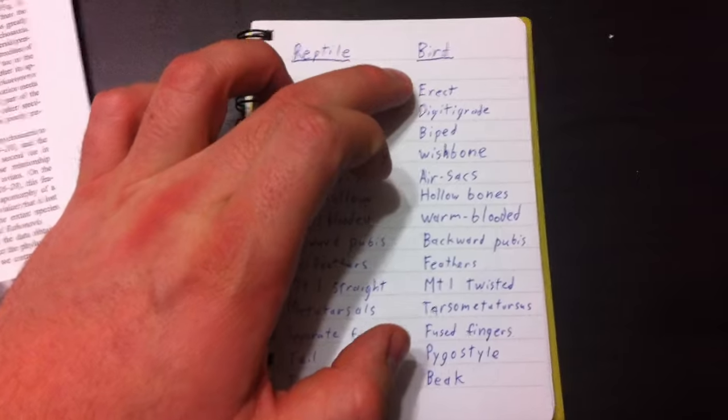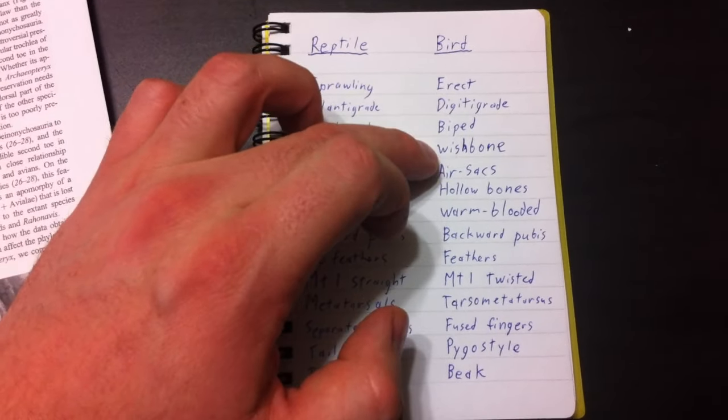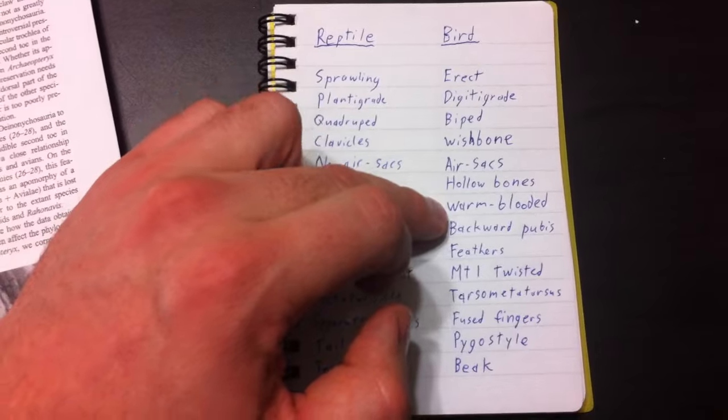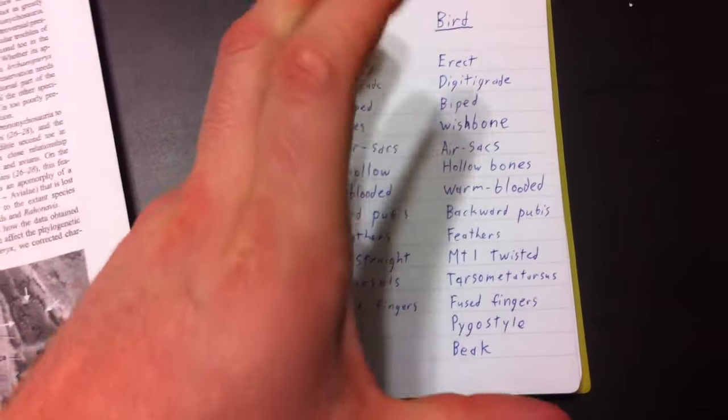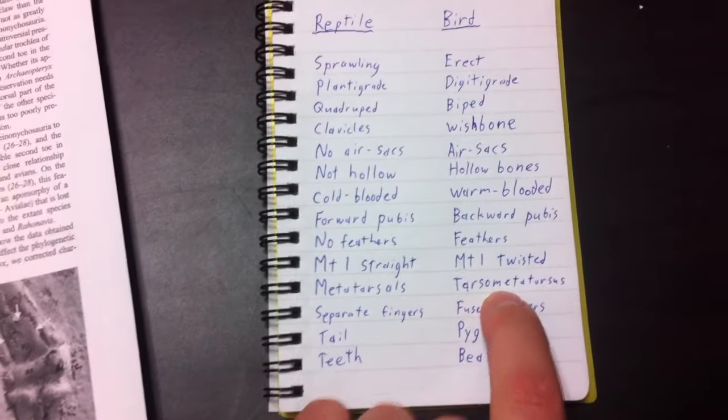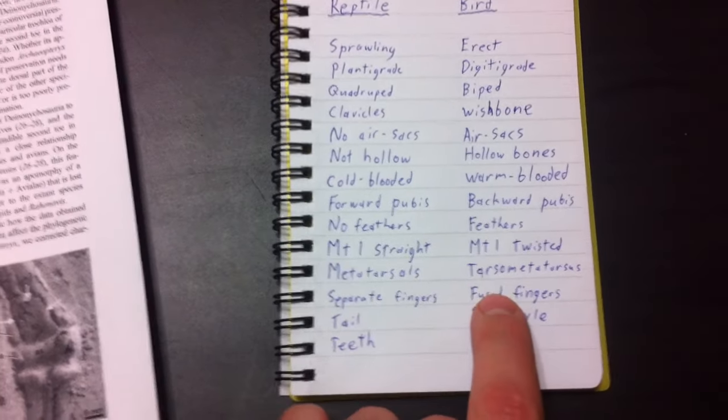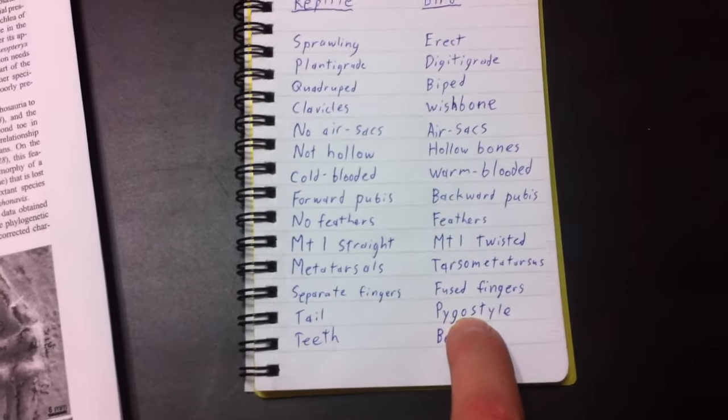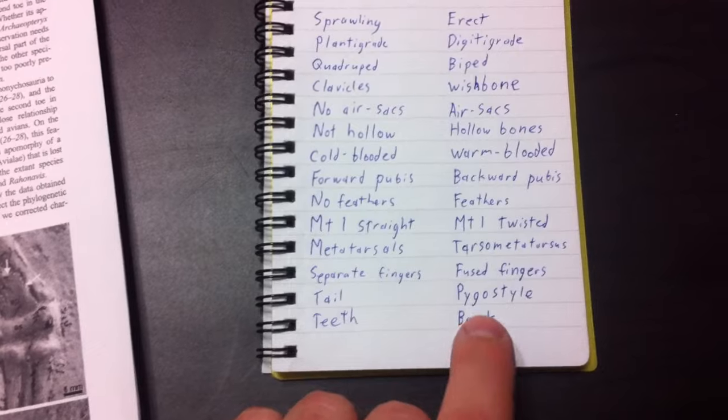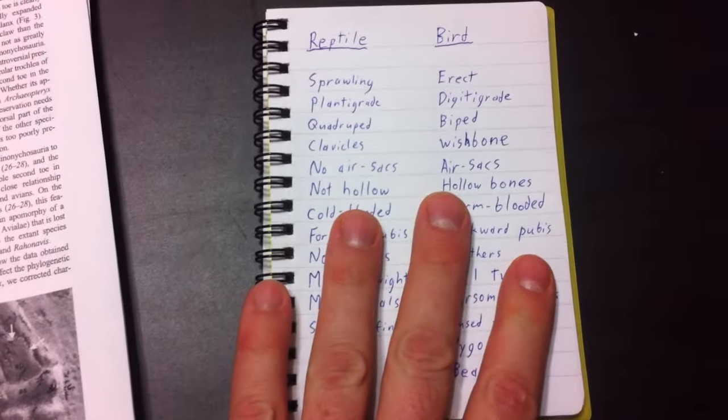Birds, on the other hand, are erect, digitigrade bipeds with wishbone, air sacs, hollow bones. They're warm-blooded. Their pubis points backwards. They have feathers. Their first metatarsal is twisted, so that they can grasp with it. They have a tarso-metatarsus made up of fused metatarsals. Their fingers are fused. They have a shortened tail fused together into a pygostyle, from which a fan of feathers radiates, and they have a beak. So obviously, lots of differences.